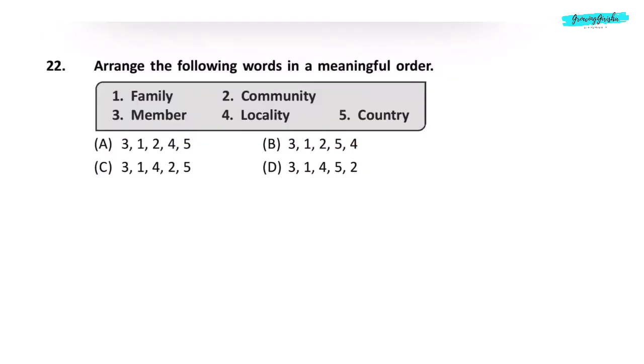Question 22. Arrange the following words in a meaningful order. First, there is a member. Many members form a family. Many families form a community. Many communities live in a locality. And locality is in a country. So the order is 3, 1, 2, 4, 5. Correct answer is option A.